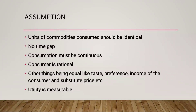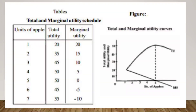There are certain assumptions for this law. Units of commodities consumed should be identical. There should be no time gap — it should be continuous consumption. The consumer is a rational person, meaning they seek more and more satisfaction from their spending. Other things must remain equal, such as taste, preference, income of the consumer, and the price of substitute goods. As per this theory, we believe that utility can be measured.